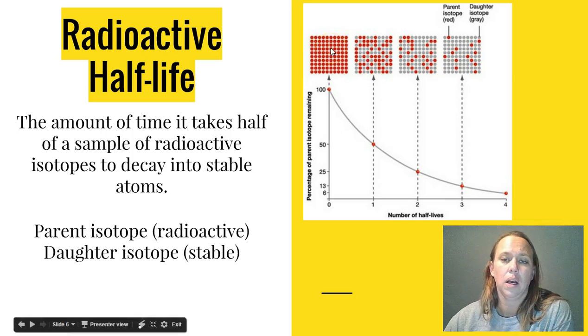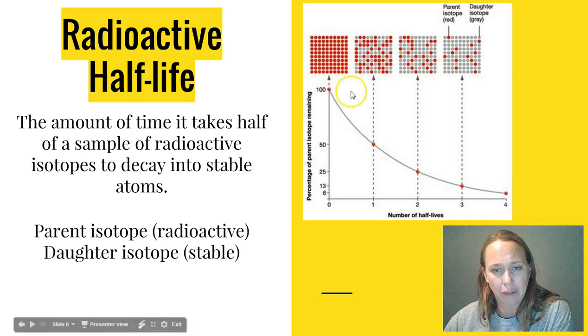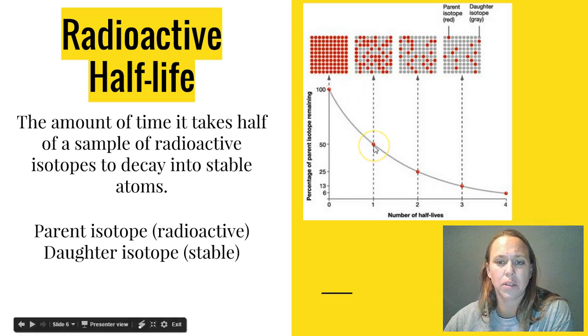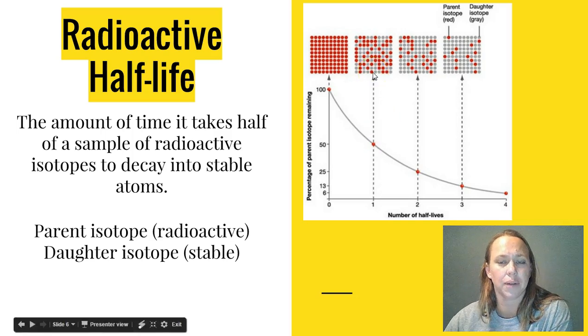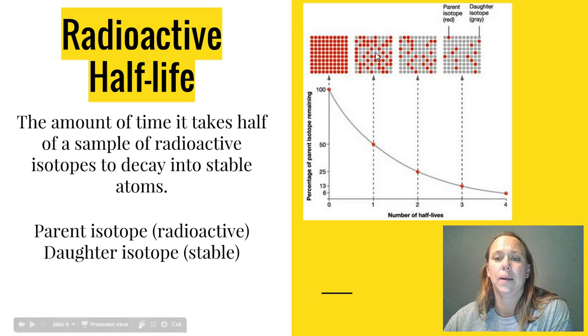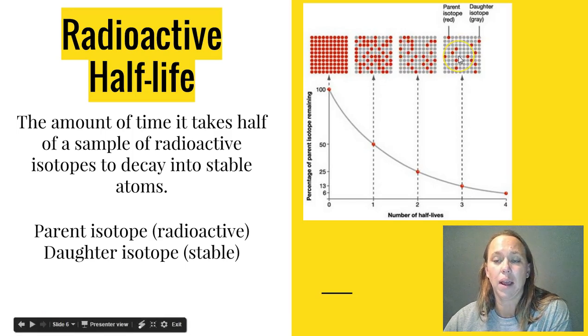But after 50% of them have decayed, it's always a pretty standard amount of time so we can start making predictions. So you talked in biology about radioactive dating, where you look at the percentage of isotopes that are still radioactive to these stable atoms they have decayed into, which actually is a new element now because they're also losing protons a lot of times. You look at those ratios and you can figure out how old a sample is. So that's how radioactive dating works.